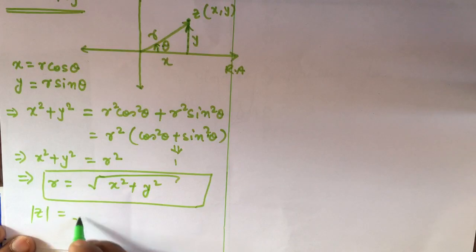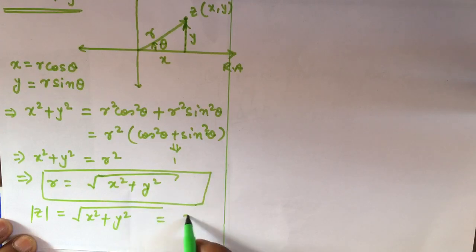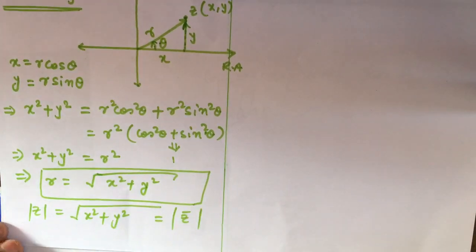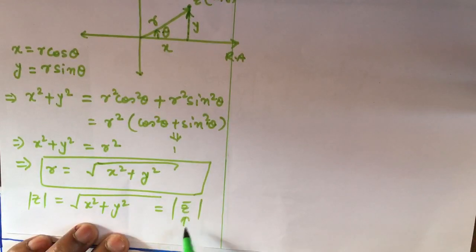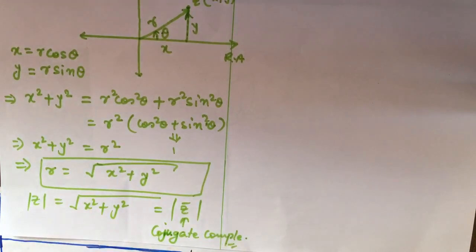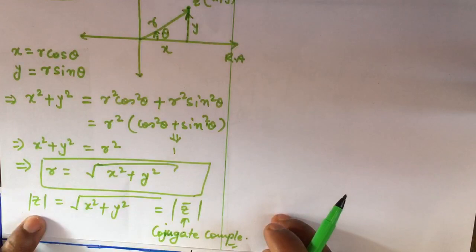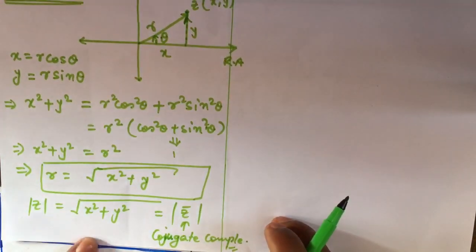The modulus is denoted as |z|, so |z| = √(x² + y²). This is also equal to the modulus of z-bar, the complex conjugate of z. The complex conjugate is formed by changing the sign of the imaginary part and keeping the real part the same.